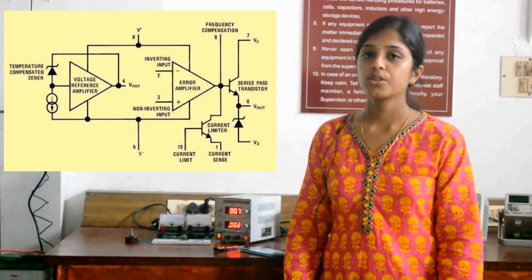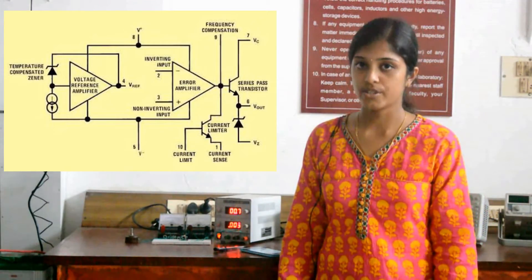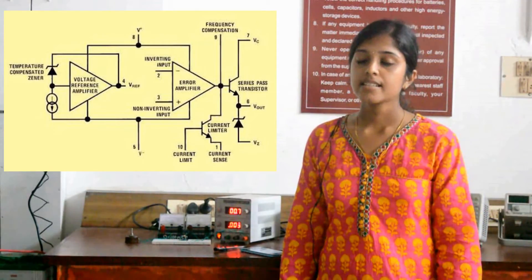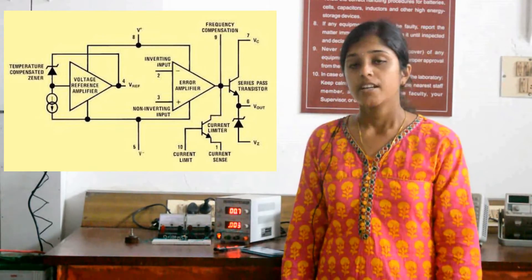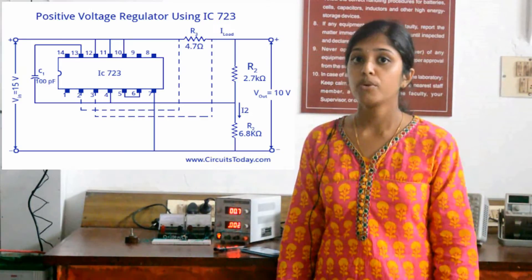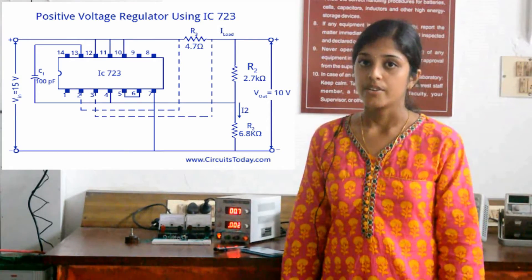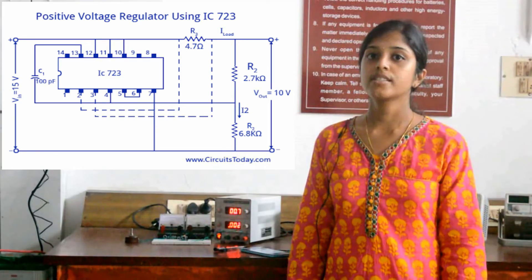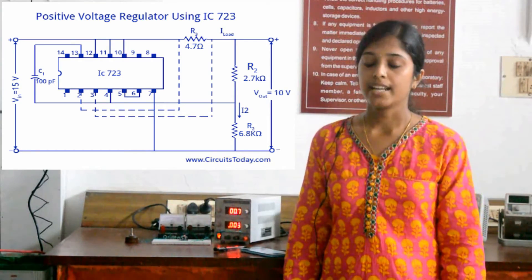When the output voltage goes low, the voltage across the inverting terminal also goes low. This increases the output voltage of the error amplifier, becoming more positive and driving transistor Q1 more into conduction. Thus, the voltage across Q1 reduces, the current across the load increases, and the voltage across Q1 increases.